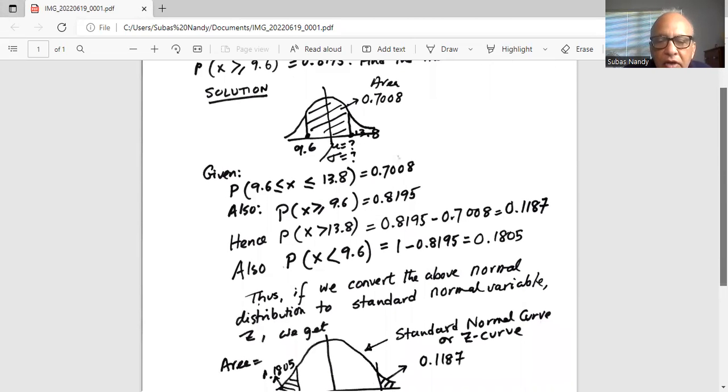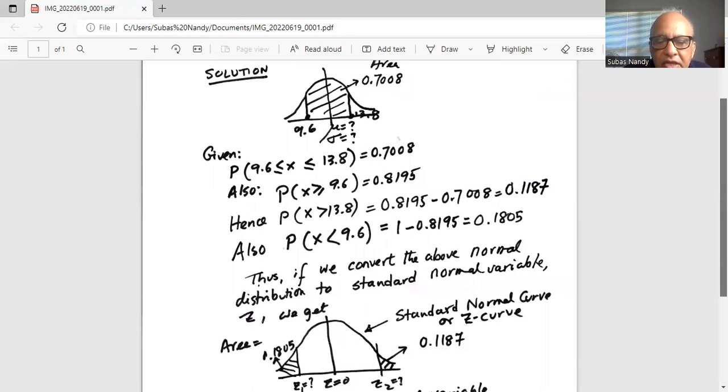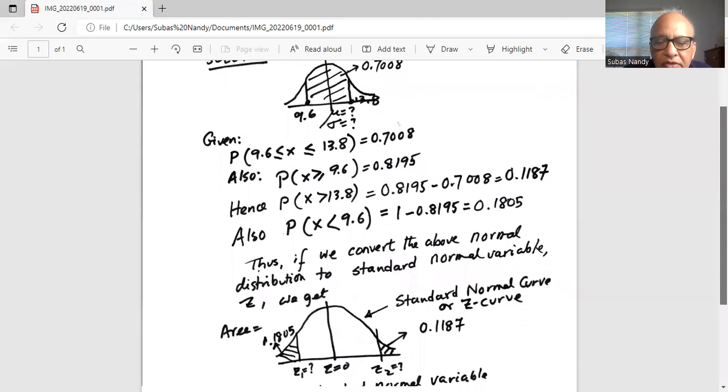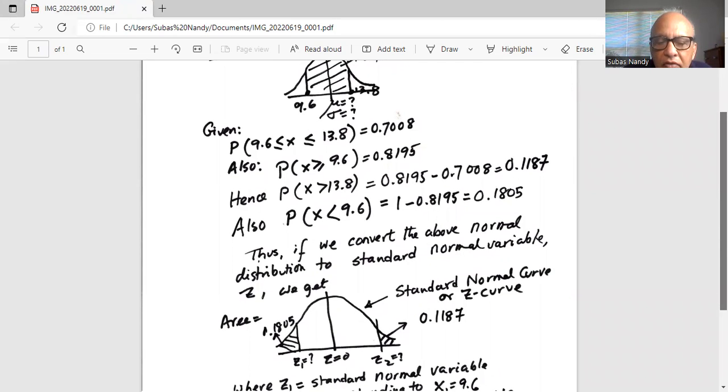Thus, if we convert the above normal distribution to standard normal curve Z, we get at the center, where μ is located, Z = 0. And we know two areas.